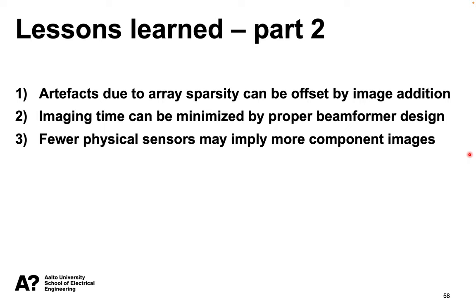To recap: some of the artifacts caused by spatial aliasing in sparse arrays can be compensated for by image addition, where we sum together several illuminations of the target scene by choosing beam patterns judiciously. We minimized the number of transmissions needed by properly designing these beam patterns. The main scaling law is that fewer physical sensors implies more component images if you want to achieve any beam pattern as the uniform array of equivalent aperture.